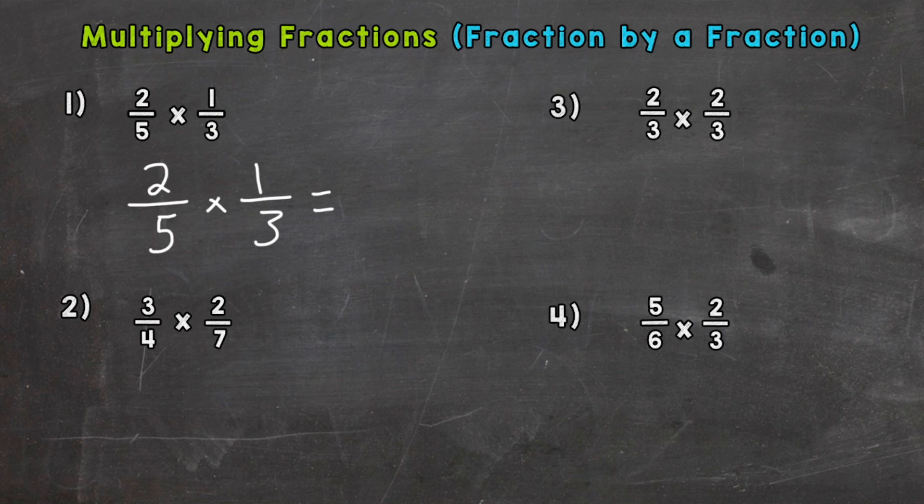Numerator by numerator, denominator by denominator. So two times one is two, five times three is fifteen, so we get two-fifteenths. Now you always check to see if your answer can be simplified. Are there any common factors other than one? The only common factor between two and fifteen is one, so this answer is simplified. We are done: two-fifteenths. Again, multiply straight across and then check to see if your answer can be simplified.